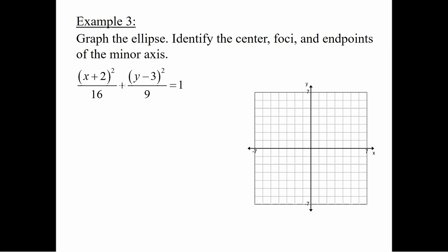Let's look at the example: (x+2)²/16 + (y−3)²/9 = 1. We start by finding a — a² is the bigger number, so a² = 16, which means a = 4. Then b² is the smaller one, b² = 9, so b = 3. We can also find c: c² = a² − b² = 16 − 9 = 7, therefore c = ±√7.